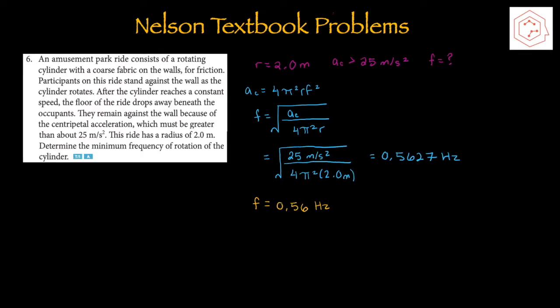Moving on to question number six: an amusement park ride consists of a rotating cylinder with coarse fabric on the walls for friction. Participants stand against the wall as the cylinder rotates, and after reaching constant speed the floor drops away. They remain against the wall because the centripetal acceleration must be greater than 25 m/s². With a radius of 2 meters, we determine the minimum frequency of rotation. Isolating for frequency gives f = √(ac / 4π²r), and rounding to 2 sig figs, the frequency is 0.56 Hz.